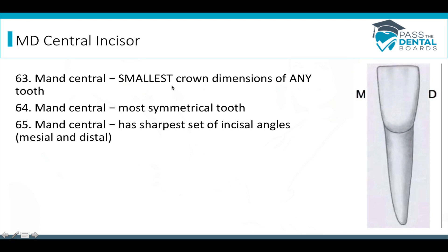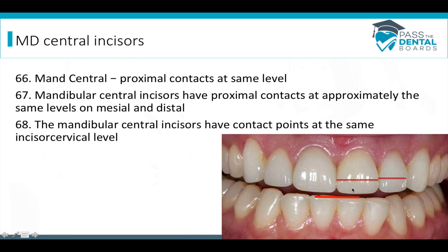The mandibular central has the smallest crown dimension of any tooth. It is the most symmetrical tooth, making it hard to tell left from right. It has the sharpest incisal line angles on the mesial and distal, which creates a very small embrasure when two centrals are placed side by side. The mandibular centrals have their proximal contacts at approximately the same incisocervical level on both the mesial and distal, again because of their high symmetry.